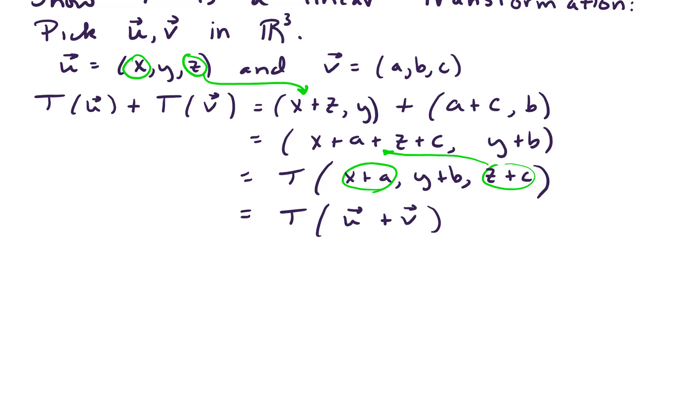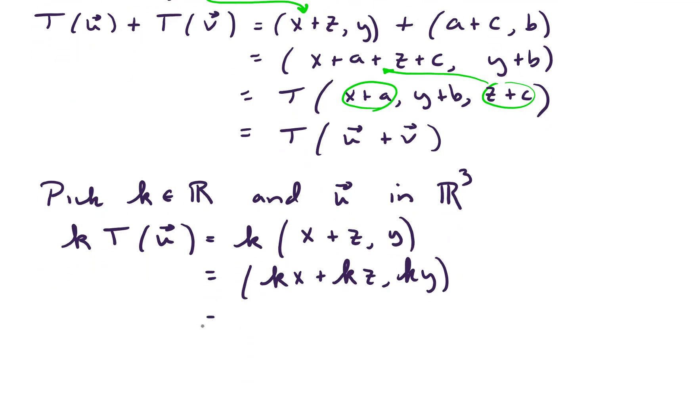So the additive property holds. The other thing we need to show is that for any scalar k in the real numbers and u in our domain set, we need to verify that k times T(u) is the same as T(k*u). So k times T(u) gives us k times (x+z, y). Performing scalar multiplication, we get (kx+kz, ky). And what we're trying to see, is that equal to T(ku), and certainly it is, because ku looks like (kx, ky, kz). So indeed, this is a linear transformation.